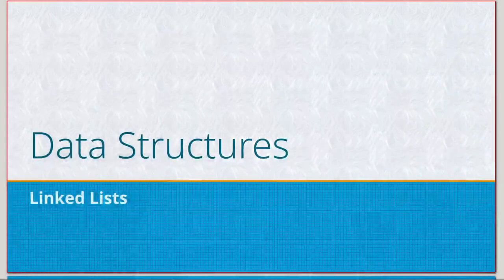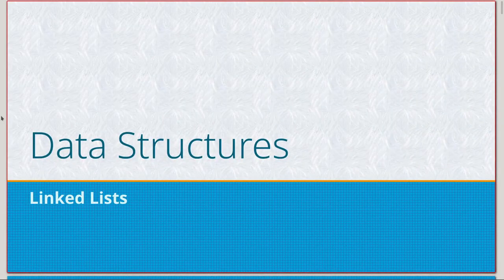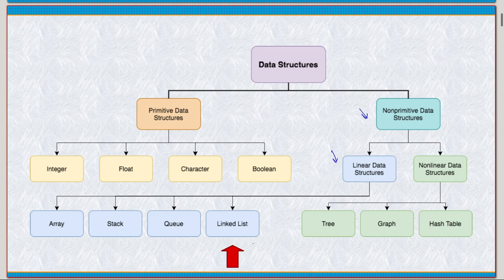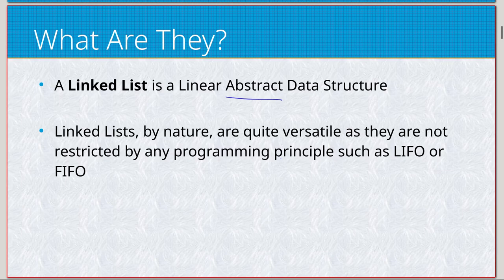So, linked lists — what are they? We have our typical graph here showing data structures on the non-primitive linear side, along with arrays, stacks, and queues. At its basis, a linked list is a linear abstract data structure. This abstract part is very important, as it defines why we care about linked lists in general. By nature they're very versatile, as there are no restrictions — no programming principle like LIFO or FIFO.